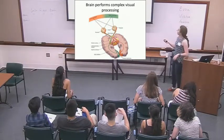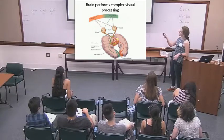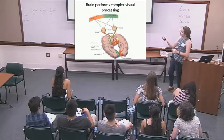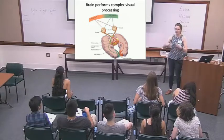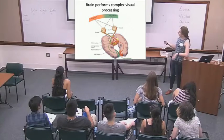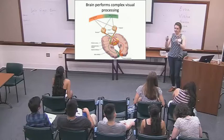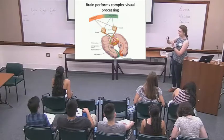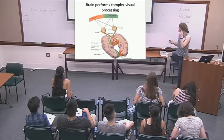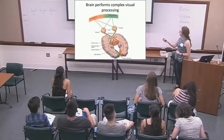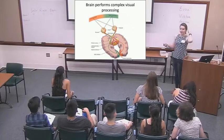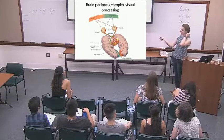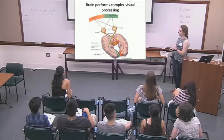Visual information from your visual fields enters each eye and gets passed through the optic nerves into different regions of the brain, moving from one region to another where more and more complex information is processed. In the retina you first get information from different points, then at the next step that becomes lines, then shapes, then objects, with color and movement processed in parallel. The first place in the cortex where all this information arrives is all the way at the back of your brain — the occipital cortex.